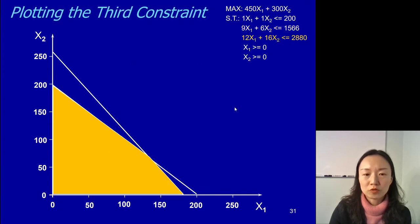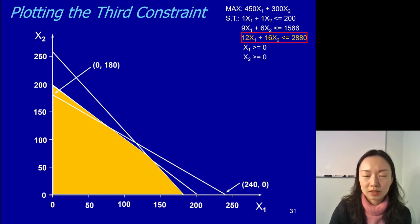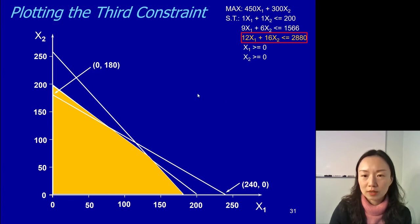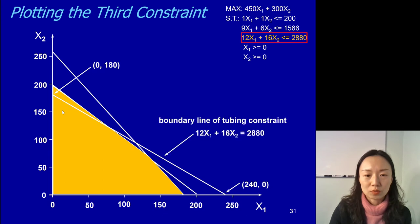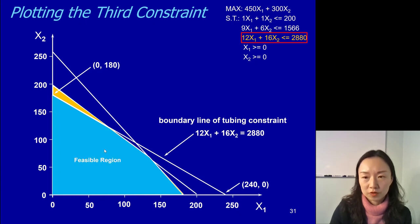Then we move to the next constraint. Identify the two points connected with a line. The x2 has a positive coefficient on the vertical axis, and it's a less-than-or-equal-to constraint, so we shade the area under. Once we have this line and shade the overlapping area, this is our feasible region.